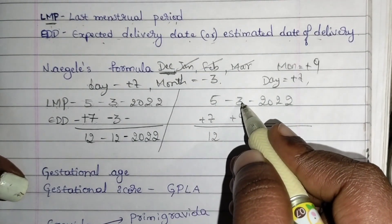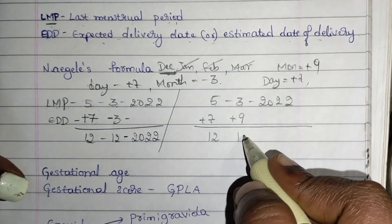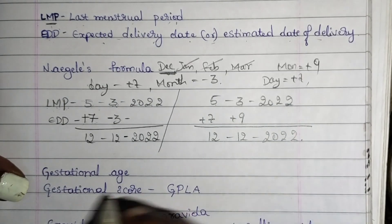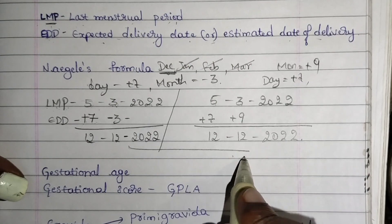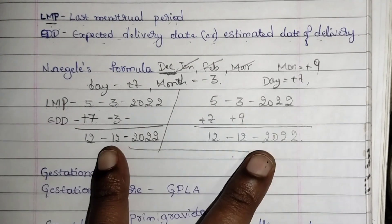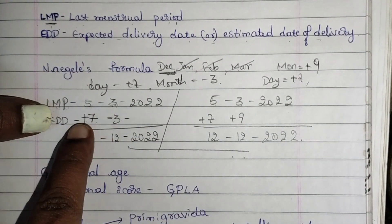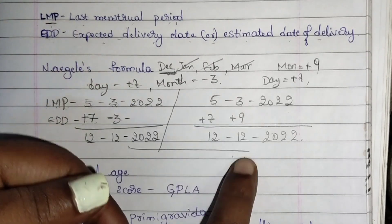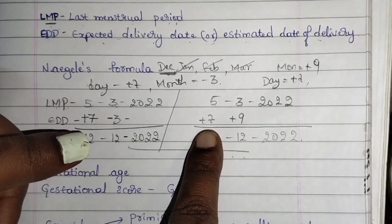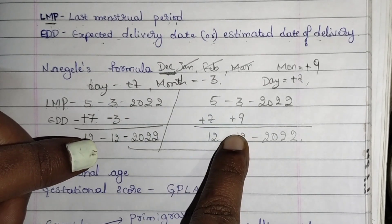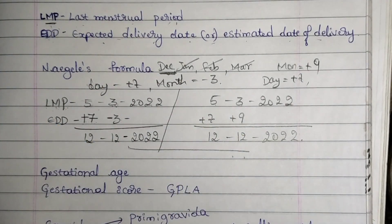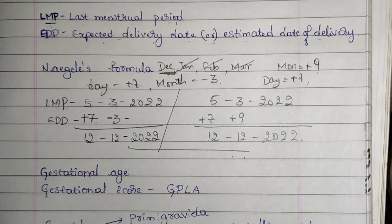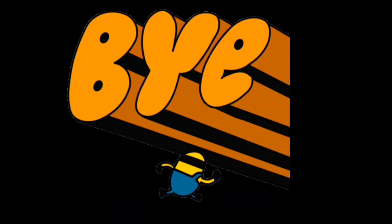So the result is 12/12/2022 — that is her expected delivery date. To summarize the two formulas: in the first formula, add 7 to the day and subtract 3 from the month. In the second formula, add 7 to the day and add 9 to the month. If you have any doubts, comment below and I will give another example. Questions will be provided at the end of the chapter.